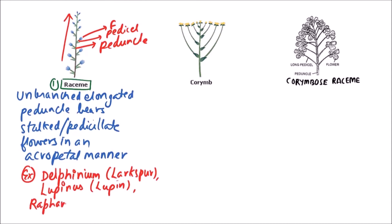Further examples of raceme include Raphanus (radish), Linaria, Agapanthus, etc.